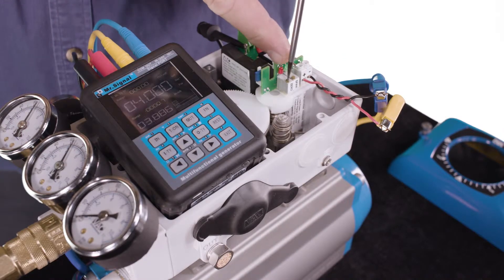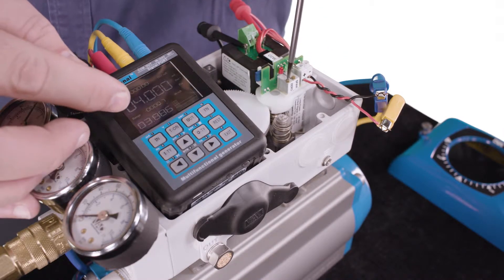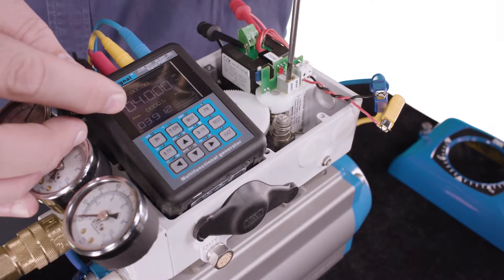Now we use the zero trim potentiometer to fine-tune the feedback to read 4 milliamps.